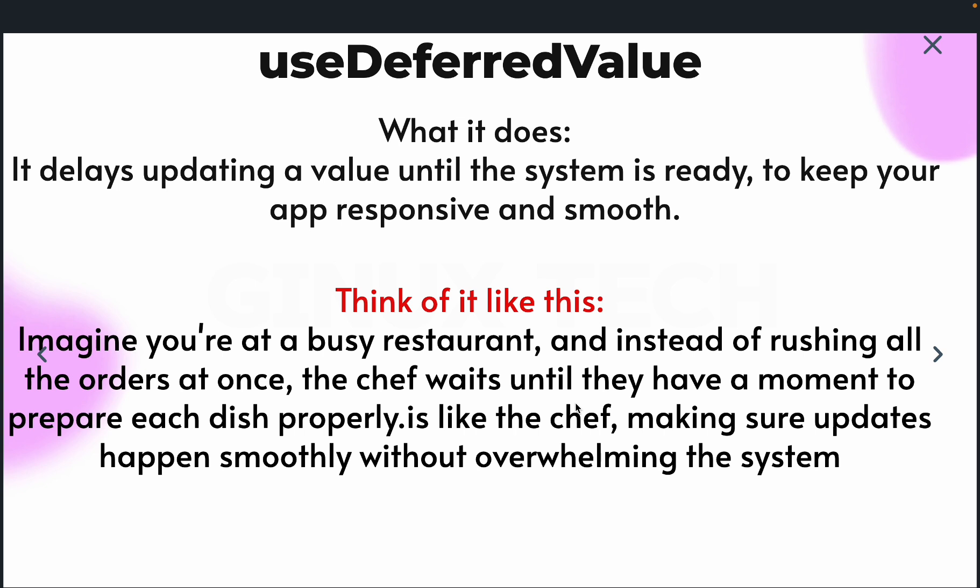The third hook is useDeferredValue, and I really love this one. What it does is delay updating a value until the system is ready, to keep your app responsive and smooth. Think of it like a busy restaurant — instead of rushing all orders at once, the chef waits until they have a moment to prepare each dish properly. It's like making sure updates happen smoothly without overwhelming the system. This hook is very important and really helpful.